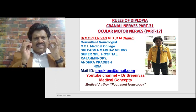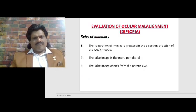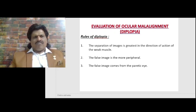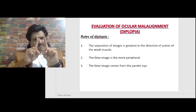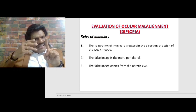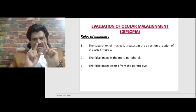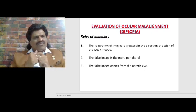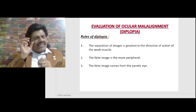What are all the important rules of double vision or diplopia? There are three important rules. The first rule: the separation of images is greatest in the direction of the action of the weak muscle. For example, the lateral rectus — what is the action of the lateral rectus?